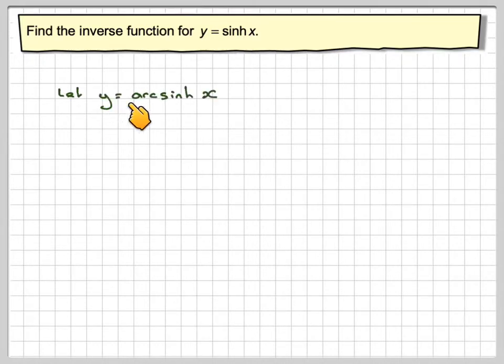Let y be equal to arcsinh of x. Then by definition, x will be equal to sinh of y. Therefore, sinh of y we can write as e to the y minus e to the minus y over 2, is equal to x.